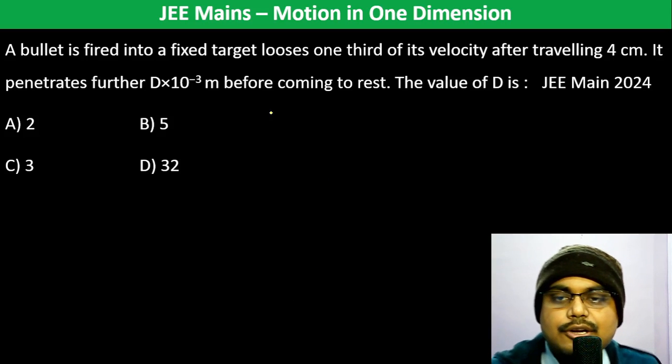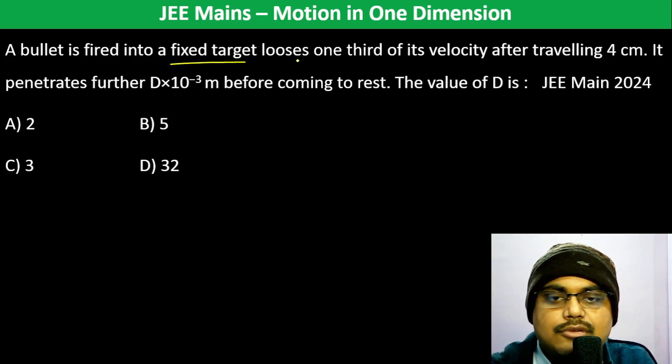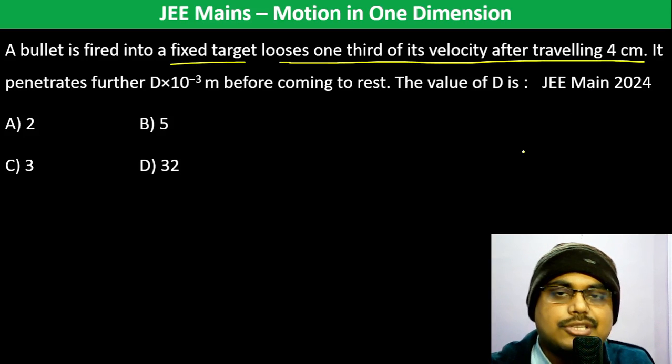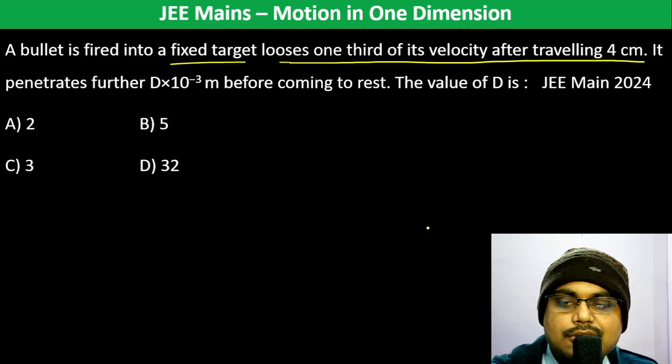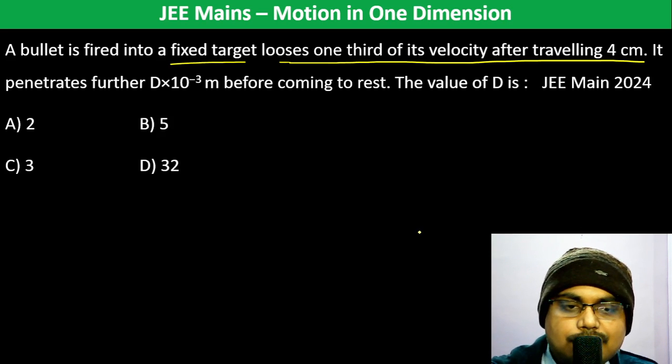A bullet is fired into a fixed target, loses one-third of its velocity after traveling 4 centimeters. It penetrates further D×10⁻³ meter before coming to rest. The value of D is?